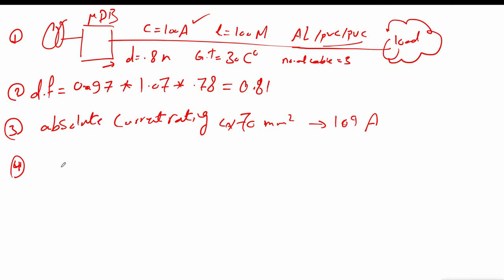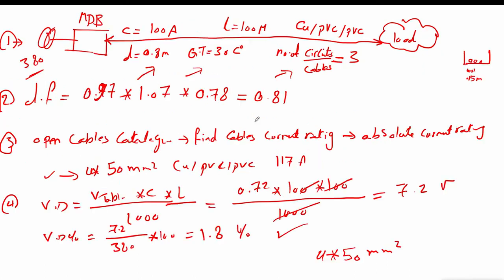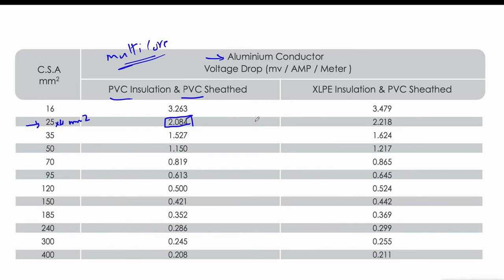Step four: calculate voltage drop. We look up the voltage drop table for the aluminum conductor, multi-core, PVC by PVC insulation, and find the value for 70 square millimeters.